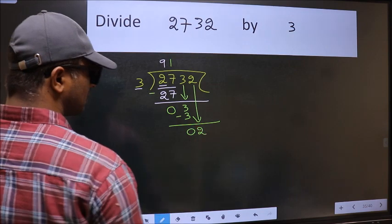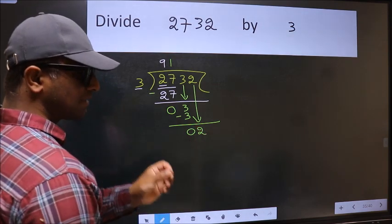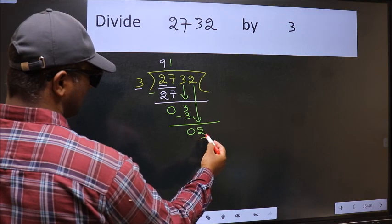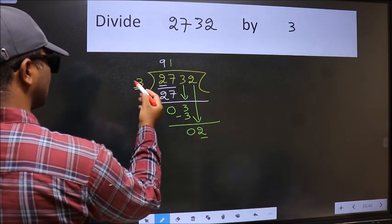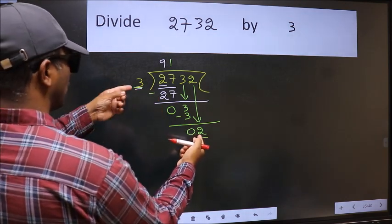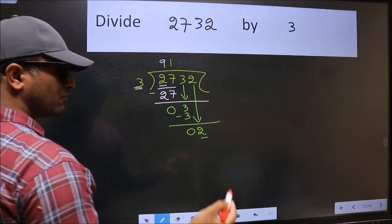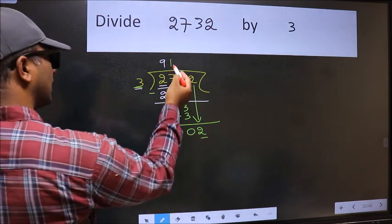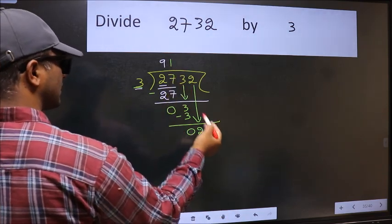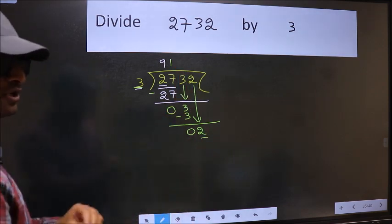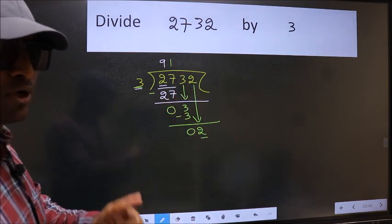After this step, the mistake happens. And the mistake is this. Here we have 2 and here 3. 2 is smaller than 3. So what many do is, they directly put dot take 0. Which is wrong.